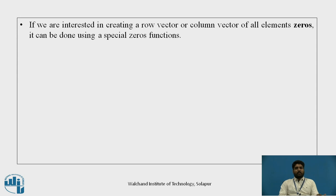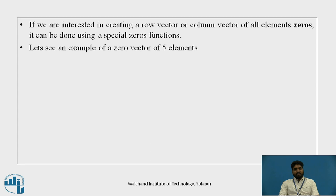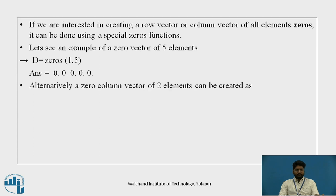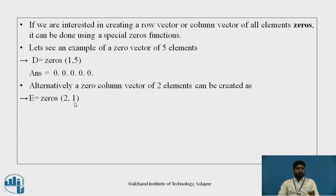If you are interested in creating a row vector or column vector of all zeros, it can be done using the special zeros function in Scilab. The command zeros(1, 5) gives a row vector — 1 indicates a single row and 5 indicates five zeros. Similarly, zeros(2, 1) gives a column vector — 1 indicates a column and there are 2 zeros.